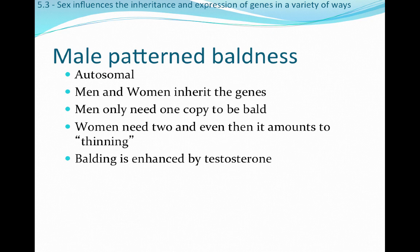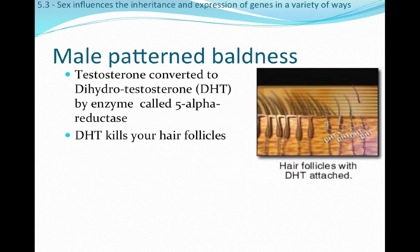In terms of phenotype, men just need one copy to be bald, which is why we see a pretty large incidence of male baldness. Women actually need two copies, and even then it really only amounts to thinning. Balding is enhanced by the presence of testosterone — we've never seen a bald ten-year-old. Male pattern baldness is affected when testosterone is converted to dihydrotestosterone, or DHT, by a reductase enzyme. The presence of this enzyme is what kills your hair follicles, leading to baldness in males or thinning hair in females.